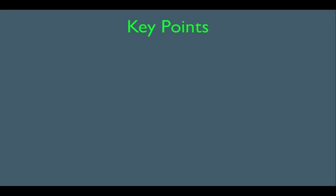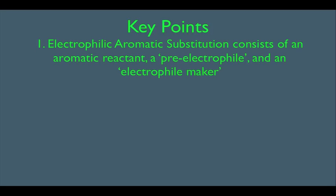In this online lecture, we're going to discuss the general mechanism for electrophilic aromatic substitution, which is a very popular aromatic reaction. Let's look at our key points first. Number one, we're going to see that electrophilic aromatic substitution consists of an aromatic reactant, something called a pre-electrophile, and something called an electrophile maker — so three things.